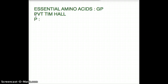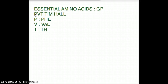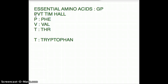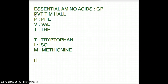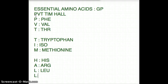P stands for phenylalanine. V stands for valine. T stands for threonine. The other T stands for tryptophan. Notice that there are two T's in the mnemonic — threonine and tryptophan — not tyrosine. I stands for isoleucine. M stands for methionine. H stands for histidine. A stands for arginine. L stands for leucine, and the other L stands for lysine.